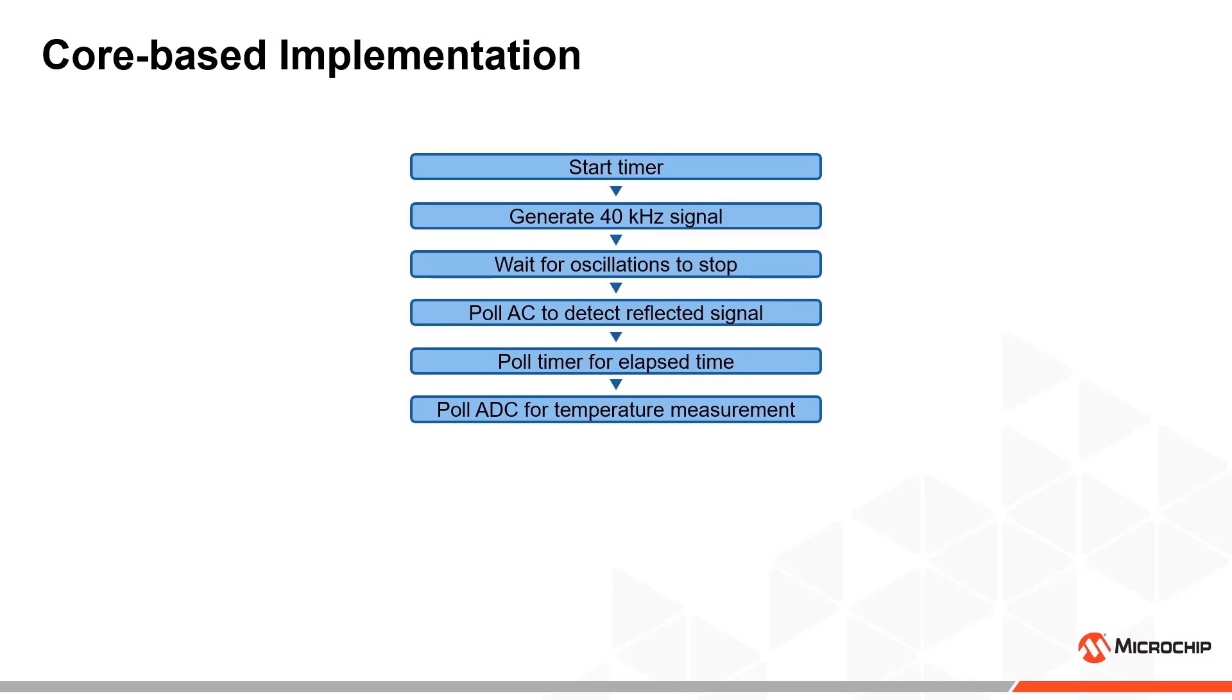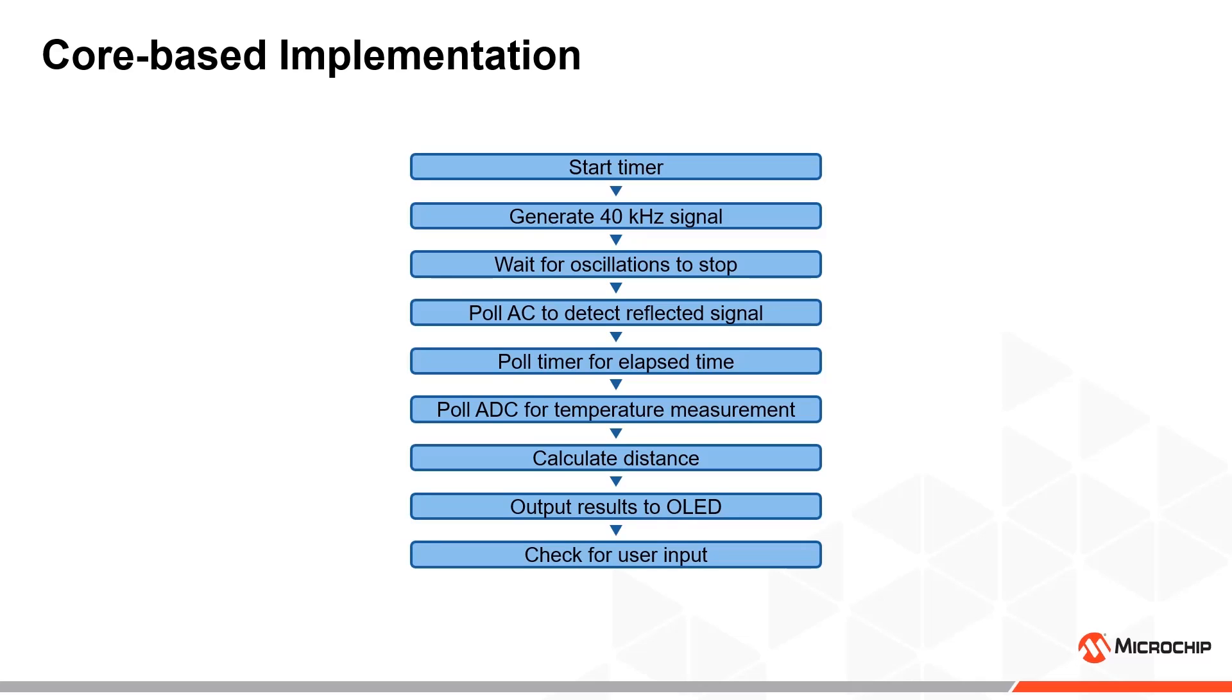This allows us to calculate the distance using the formula we looked at previously and we can output the results to the OLED display. A check for user input is conducted, and the process is started all over again with a new pulse train for continuous measurements.